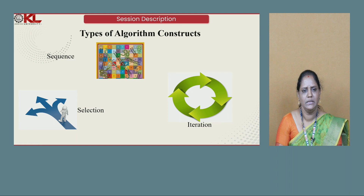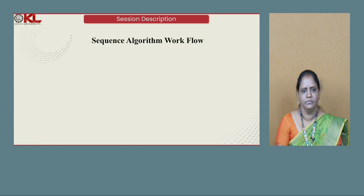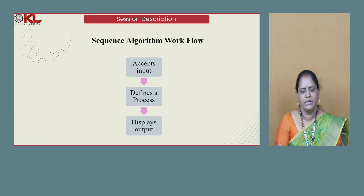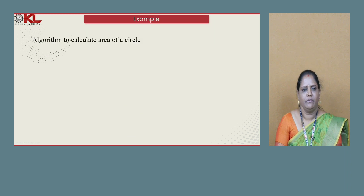In sequence, the algorithm steps are performed in a sequential order. In selection, the steps are performed based on some condition. In iteration, the steps are executed repeatedly until the given condition is false. The sequence algorithm workflow involves accepting some input, defining some process, and displaying the output. For example, we will write an algorithm to calculate the area of a circle, which comes under the sequence algorithm construct.